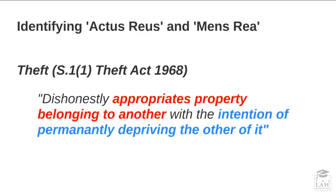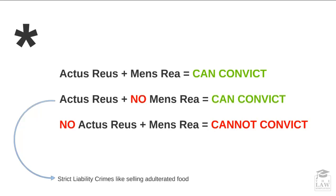It is important to note that where a crime is not a strict liability offence, both the actus reus and the mens rea elements have to coincide as well as be present. What's important to take from this lesson is that there are offences which can be committed without a mens rea, without a mental element, but the converse cannot be said — without an actus reus, without the act itself, an offence proper cannot be committed.